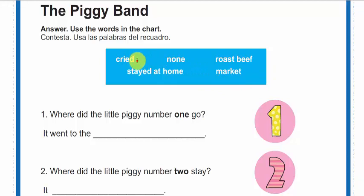¿Qué significan esas palabras? Cry significa lloró. None, ninguna. Roast beef, carne rostizada. Stayed at home, se quedó en casa. Market, mercado.